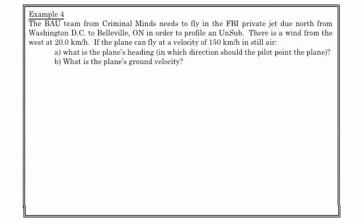Final example here is one that's very similar to the last. Criminal Minds, great television show. But the BAU team from Criminal Minds needs to fly in the FBI private jet due north from Washington to Belleville in order to profile an unsub. There's a wind from the west at 20 kilometers per hour, and their private jet can only fly at a velocity of 150 kilometers per hour in still air. Maybe it's just not that much of an emergency. Usually private jets go faster than that. Anyways, what's the plane's heading? In which direction should the pilot point the plane? And what's the plane's ground velocity? So we'll do a little diagram here.